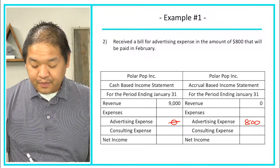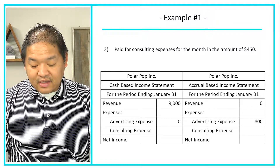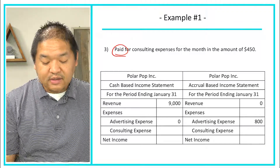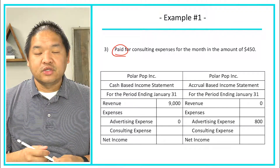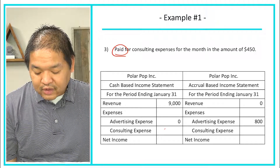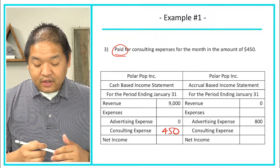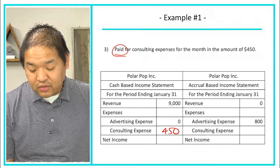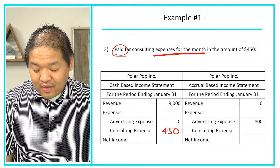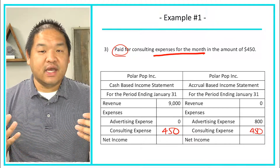Transaction three: we paid $450 for consulting expenses for the month. The key word is 'paid' — cash has gone out, so under the cash basis we record $450 in consulting expense. Under the accrual basis, since we paid for consulting services for the month, the assumption is the expense actually occurred, so we also book $450. In this case, both methods give the same result.